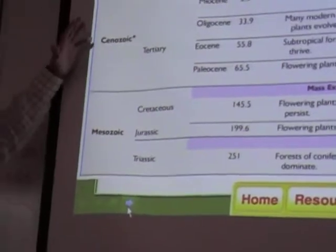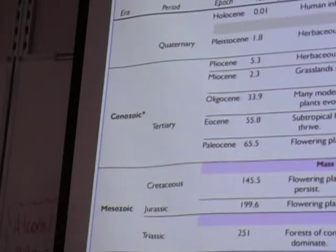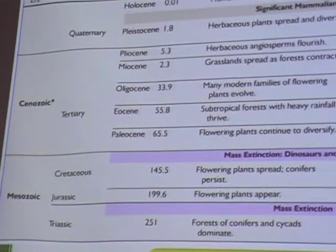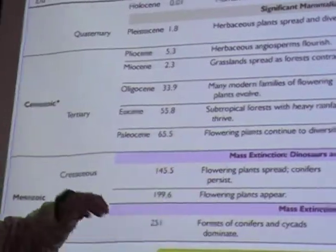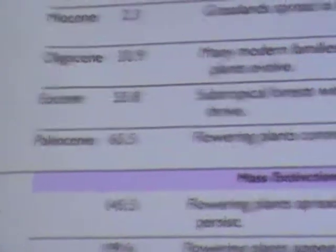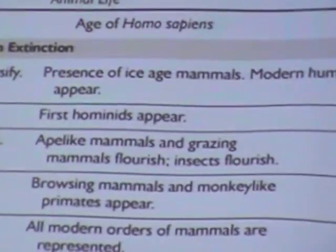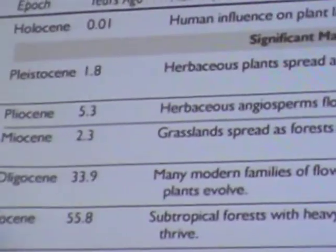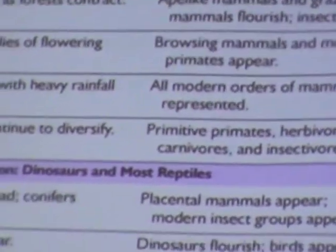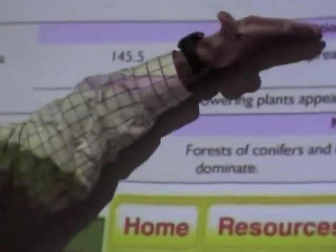The era we are in right now is called the Cenozoic Era — the most recent era, the era of mammals, with a lot of flowering plants. The mammals came around after the Mesozoic Era. The Mesozoic Era was the age of the dinosaurs. The dinosaurs all went extinct — at the end of the Mesozoic Era there was a mass extinction. A meteor hit the Earth and killed almost all the dinosaurs.